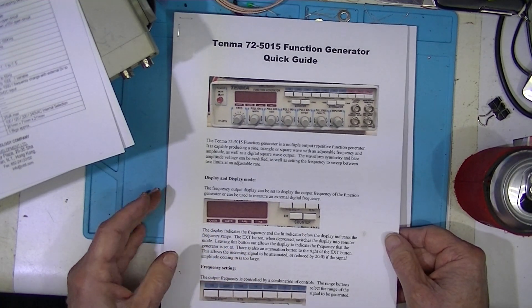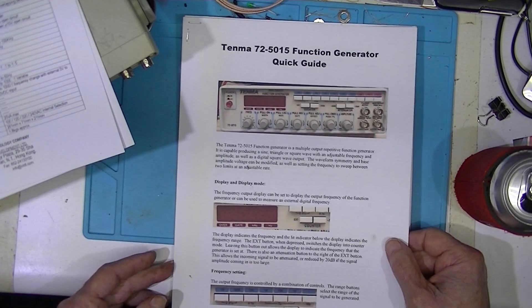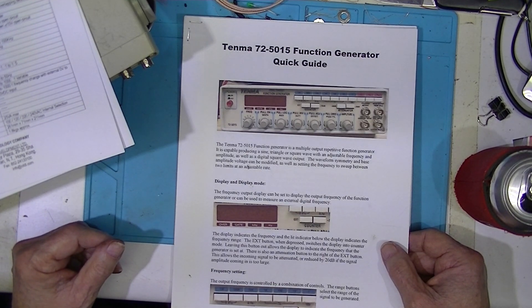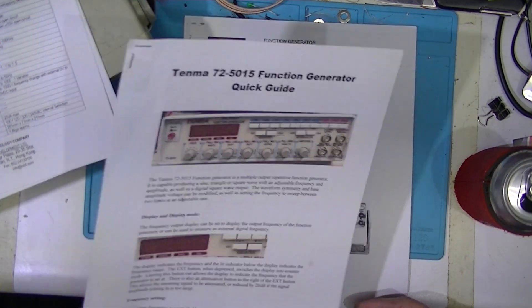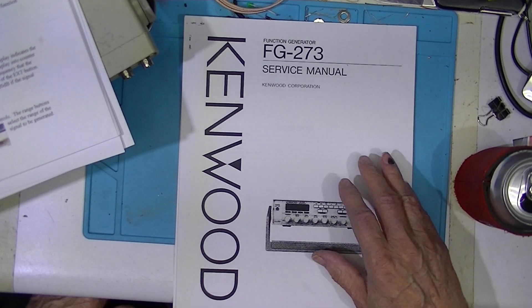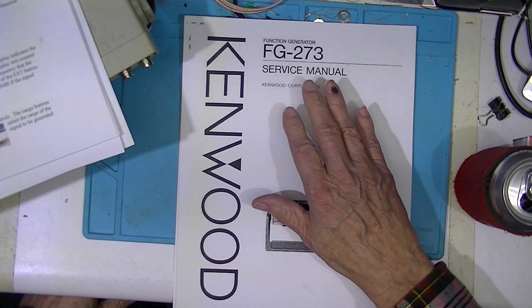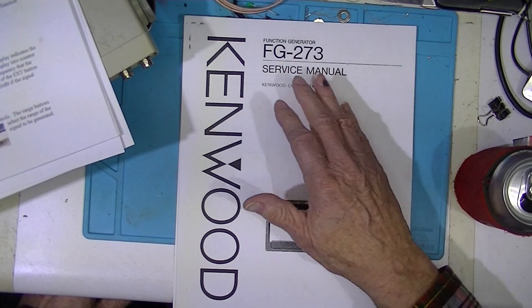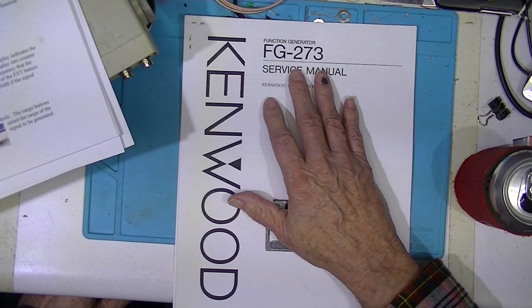Then I hit gold. At a German site, and I don't read German, I found that they claim it's equal to a Kenwood function generator, FG-273.